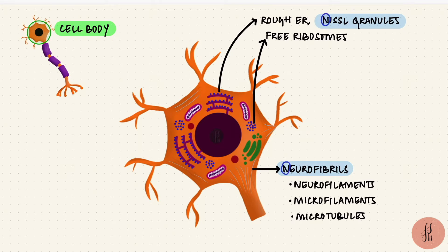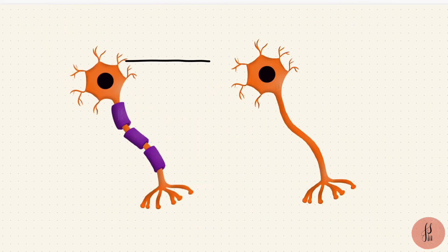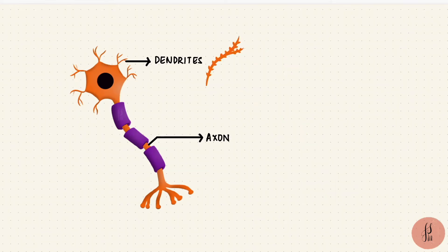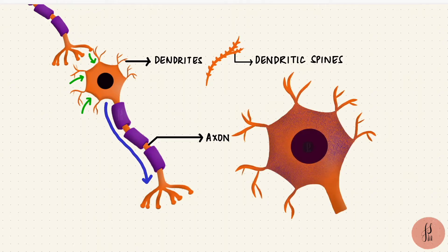And from the cell body, remember, there are those branching processes called neurites. Short processes are called dendrites, and the longer processes are called axons. The dendrites have projections called dendritic spines. They bring information from other neurons towards the cell body, and the axon carries information away from it. The Nissl substance extends into the dendrites but does not extend into the axon.